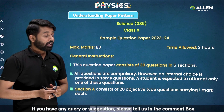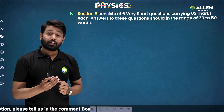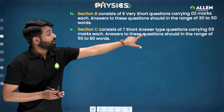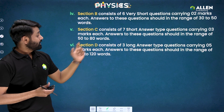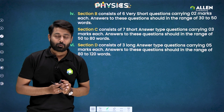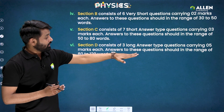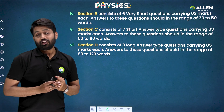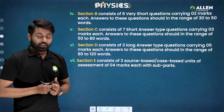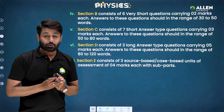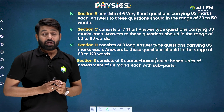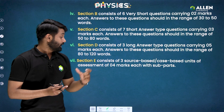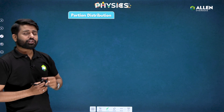Section B consists of six very short answer type questions carrying two marks each. Section C consists of seven short answer type questions carrying three marks each. Section D consists of three long answer type questions carrying five marks each. A word range is already prescribed, so write your answers within the given word range. Section E consists of three source-based and case-based units — you must have practiced case study type questions.